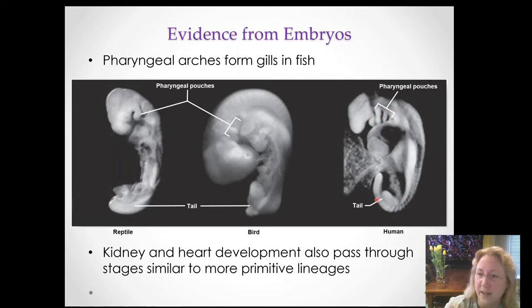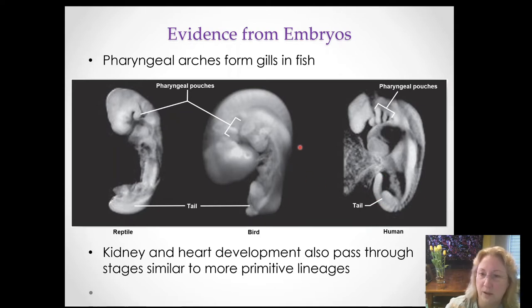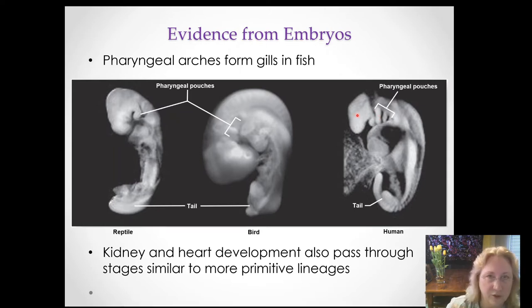At this same stage, the human embryo also has a tail, which will later be reabsorbed in almost everybody. So what are these pharyngeal arches doing in all the vertebrates other than fish — vertebrates that don't have gills, like birds?